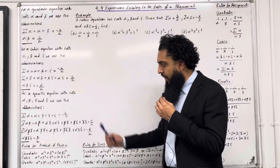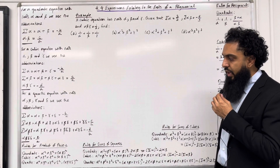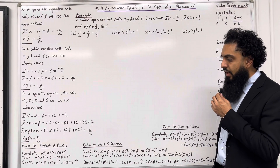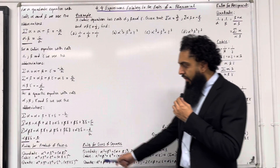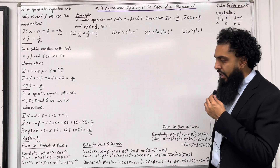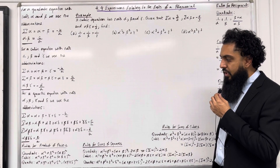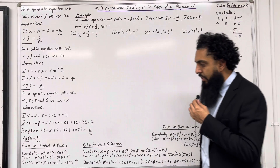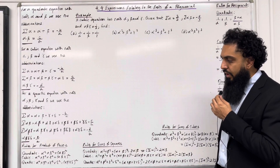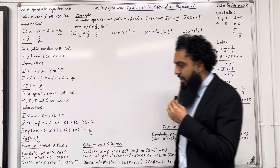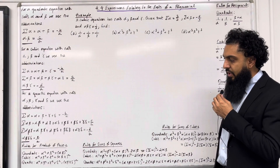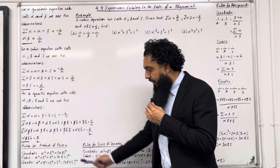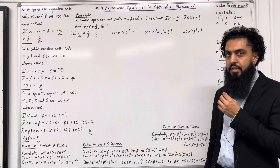Let's have a look at some important rules — rules for a product of powers. For a quadratic, alpha to the power n multiplied by beta to the power n is equal to (alpha beta) to the power n. For a cubic, alpha to the power n multiplied by beta to the power n multiplied by gamma to the power n is equal to (alpha beta gamma) to the power n. And for a quartic, alpha to the power n multiplied by beta to the power n multiplied by gamma to the power n multiplied by delta to the power n is equal to (alpha beta gamma delta) to the power n.